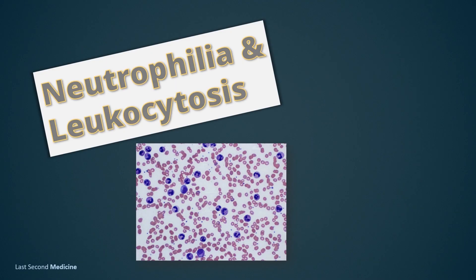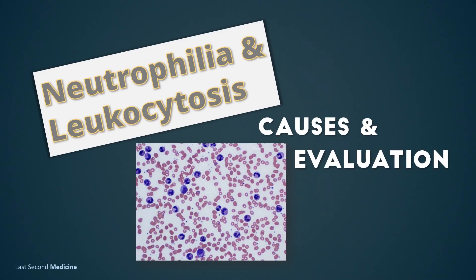Hello friends. Whenever we find raised white blood cells, the most common reason is usually infection. Sometimes infection may not be the obvious cause, and occasionally, for some other reason, you do the blood test and unexpectedly find elevated white cells or leukocytosis. So, what differential diagnosis to consider for leukocytosis?